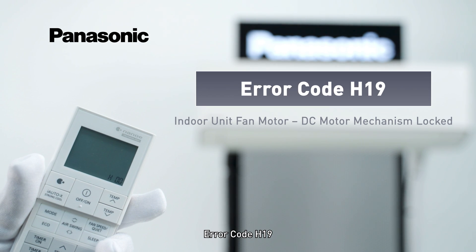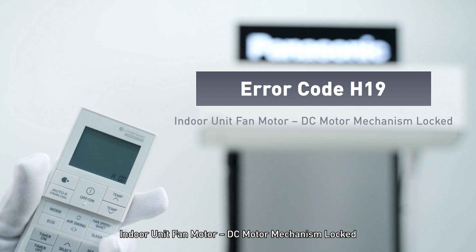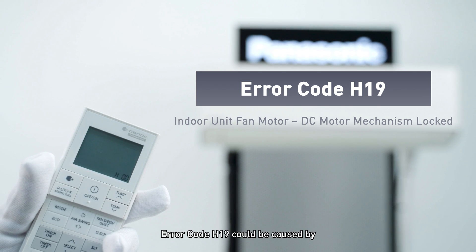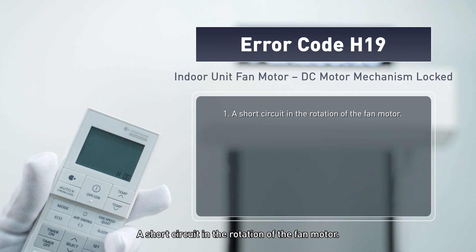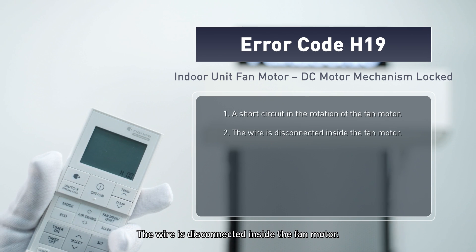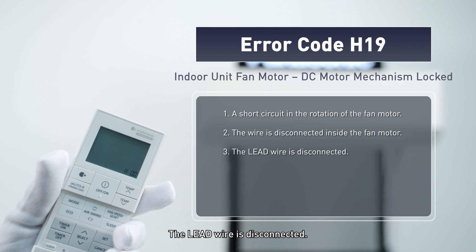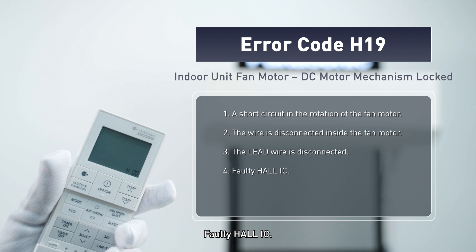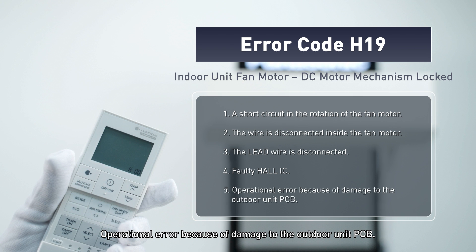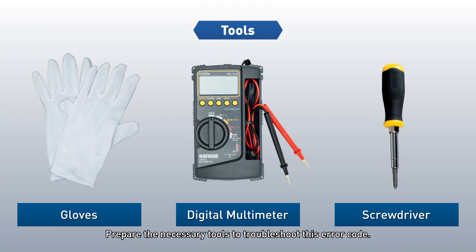Error code H19 is an indoor unit fan motor DC motor mechanism lock error. Error code H19 could be caused by a short circuit in the rotation of the fan motor, a disconnected wire inside the fan motor, a disconnected lead wire, a faulty hall IC operational error, or damage to the outdoor unit PCB. Prepare the necessary tools to troubleshoot this error code.